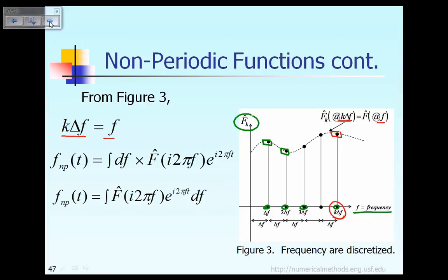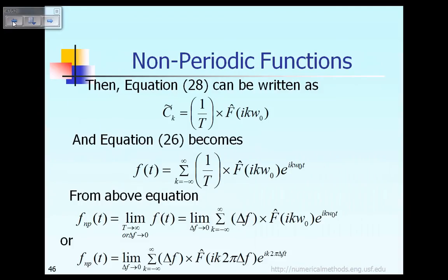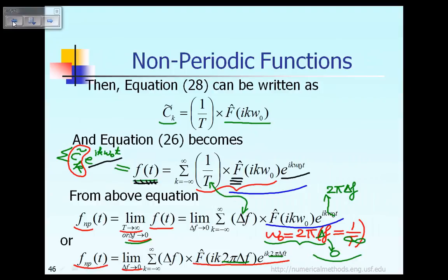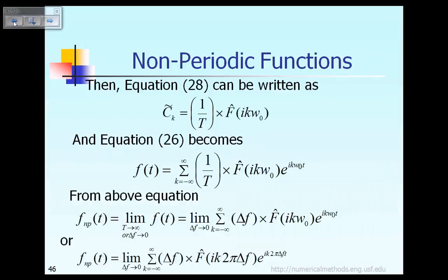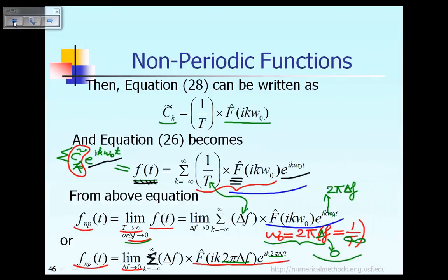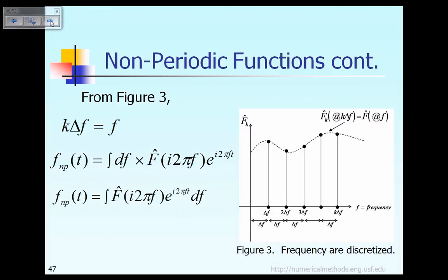So in other words, k times delta-f represents a certain frequency f. With k·delta-f considered as the frequency f, you look at the previous formula on the previous slide — specifically the last equation there. When you take the limit of delta-f approaching 0, in the limit the summation will become the integral. Also, when delta-f approaches 0, that is the same as saying delta-f becomes df.